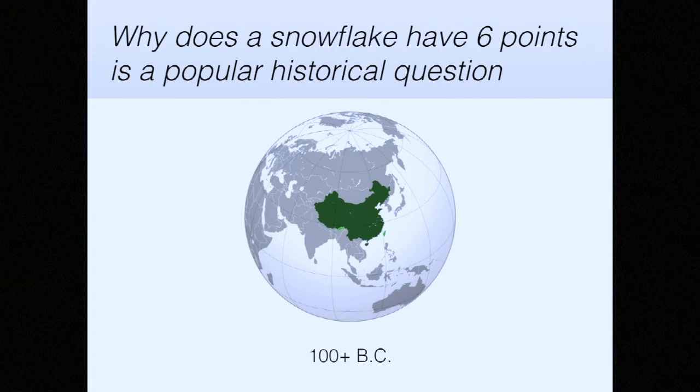This has been a question that people have asked for many years. Back over 2,000 years ago in China, ancient Chinese philosophers discussed snowflakes and wondered why snowflakes have six points versus many flowers have five petals. This was basically just a thought process for philosophers way back at the time.